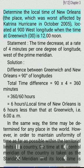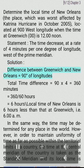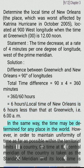Example 2: Determine the local time of New Orleans, the place which was worst affected by Katrina hurricane in October 2005, located at 90 degrees west longitude when the time at Greenwich, 0 degrees, is 12:00 noon. The time decreases at a rate of 4 minutes per 1 degree of longitude west of the prime meridian. Solution: Difference between Greenwich and New Orleans equals 90 degrees of longitudes. Total time difference equals 90 × 4 = 360 minutes = 360/60 hours = 6 hours. Local time of New Orleans is 6 hours less than that at Greenwich, i.e., 6:00 a.m.